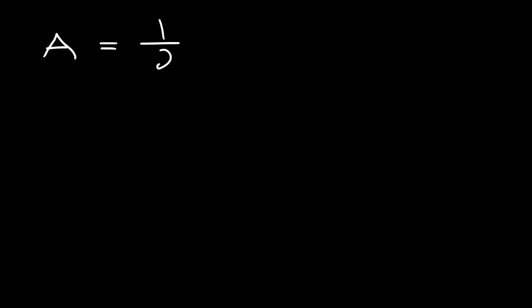In this video we're going to talk about how to solve for the specified variable in a formula. Let's say we have the formula that describes the area of a trapezoid: it's 1/2 times (B1 plus B2) times the height of the trapezoid. In this example our goal is to solve for B1.